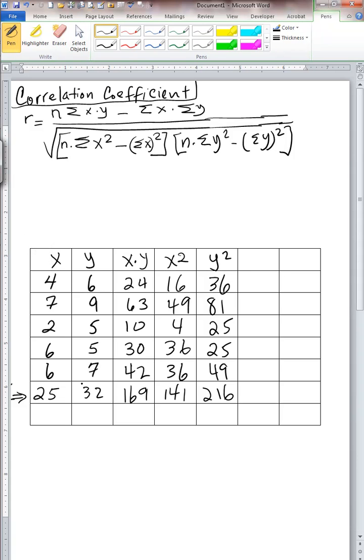This is a continuation of the problem for which we computed the regression equation. The equation for Pearson's correlation coefficient, r, is given in your book as you see in this formula.